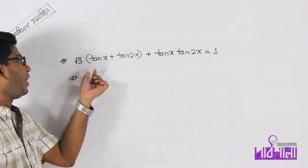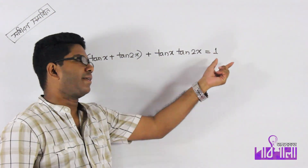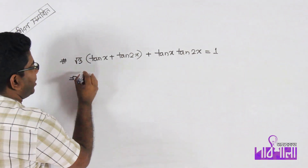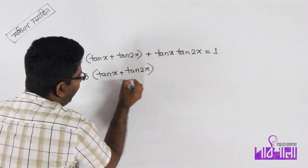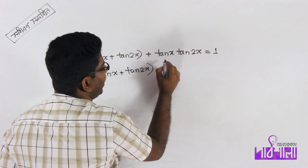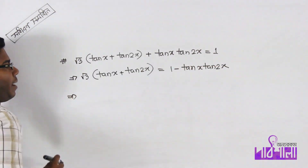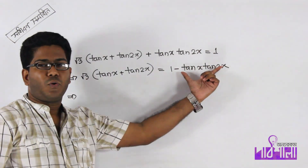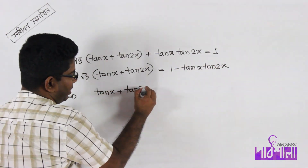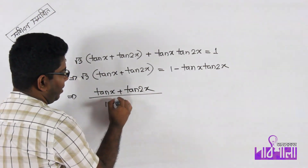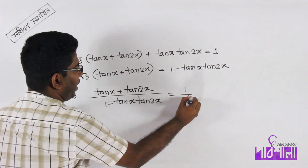We begin with the equation: root 3 into (tan x + tan 2x) equals 1 minus tan x · tan 2x. The value of tan x plus tan 2x divided by 1 minus tan x · tan 2x is set up. Then 10x plus 10 twice x divided by 1 minus 10x · 10 twice x equals 1 by root 3.